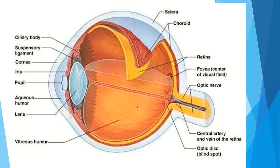This is the fovea — the most sensitive part of the retina where sharp images are formed. This is the blind spot — the area of the retina where light-sensitive cells are not present.